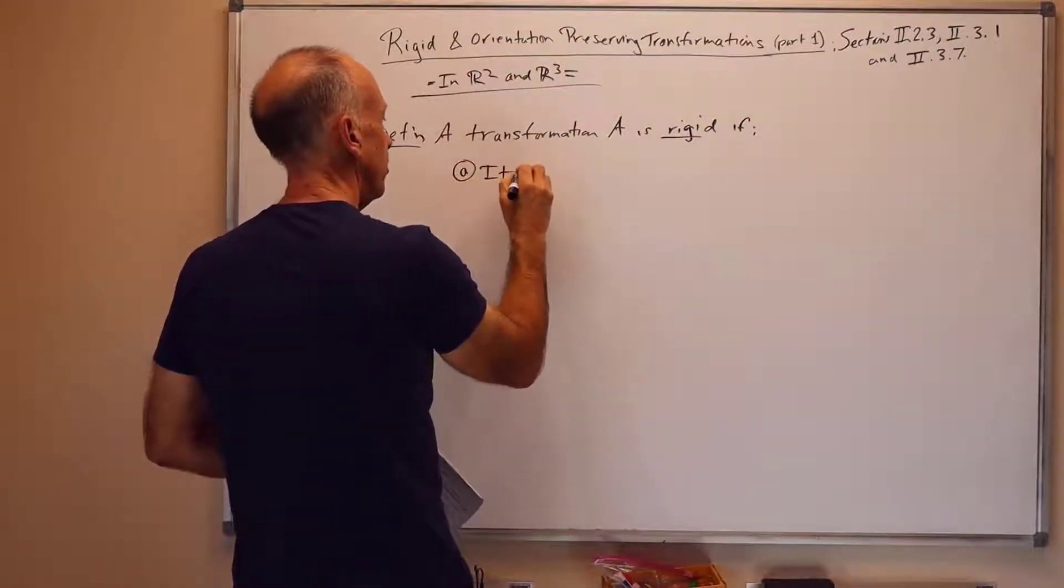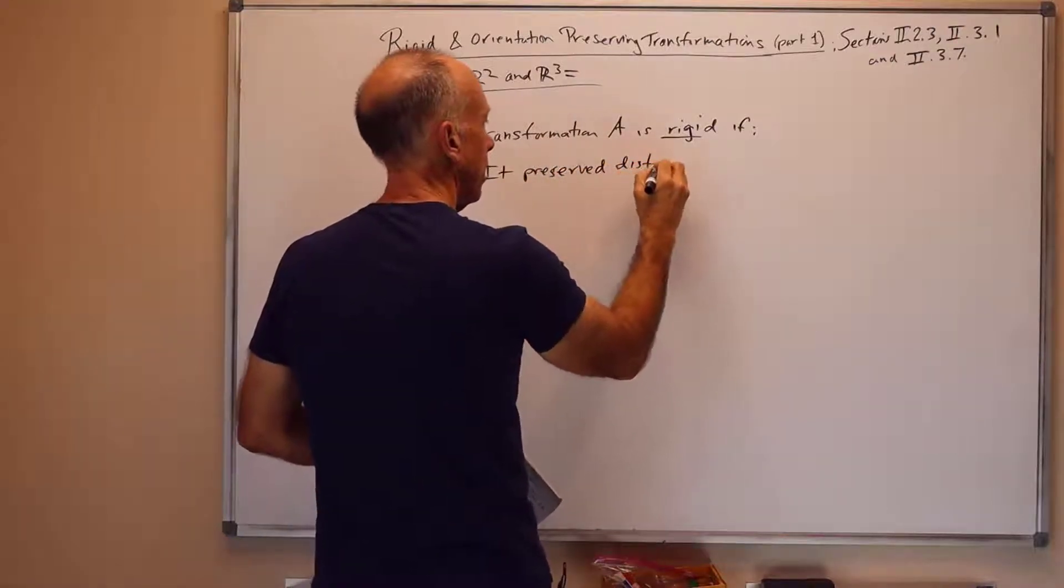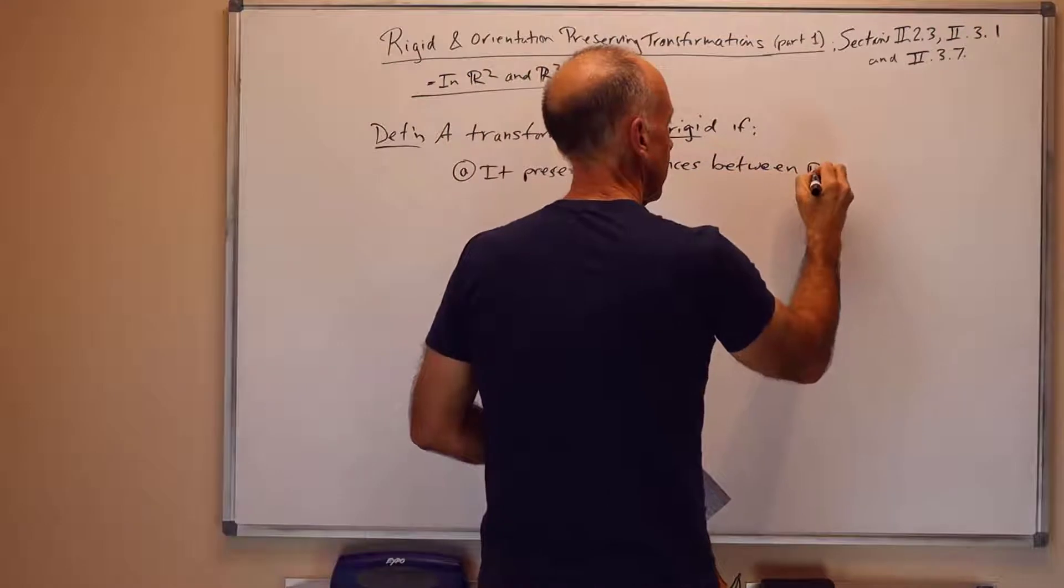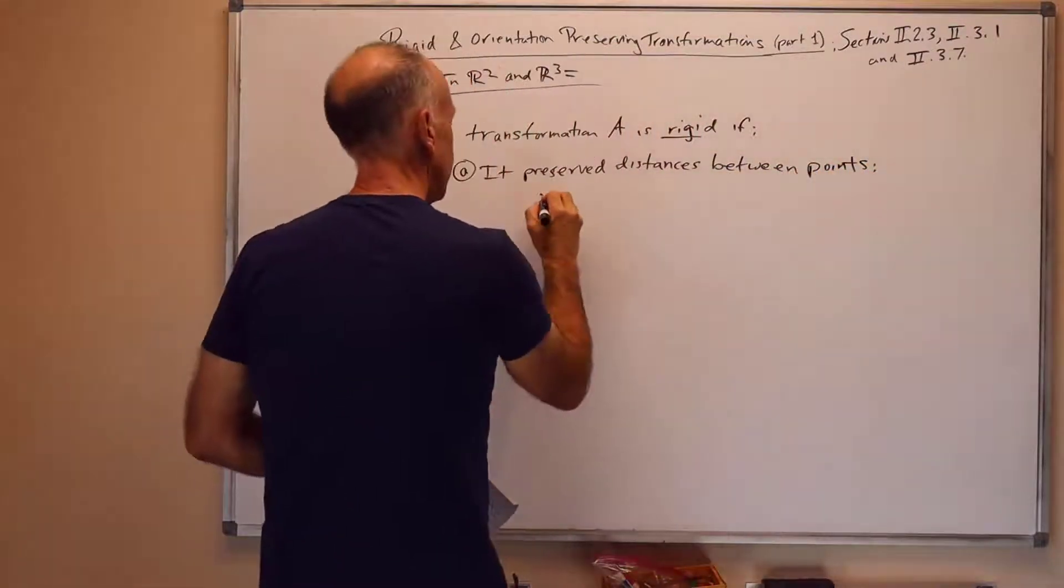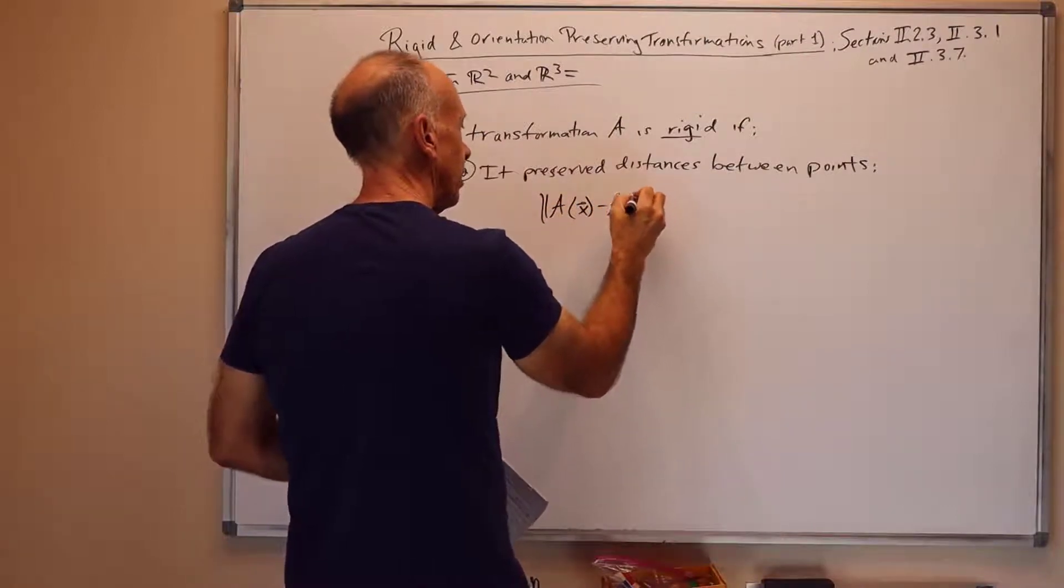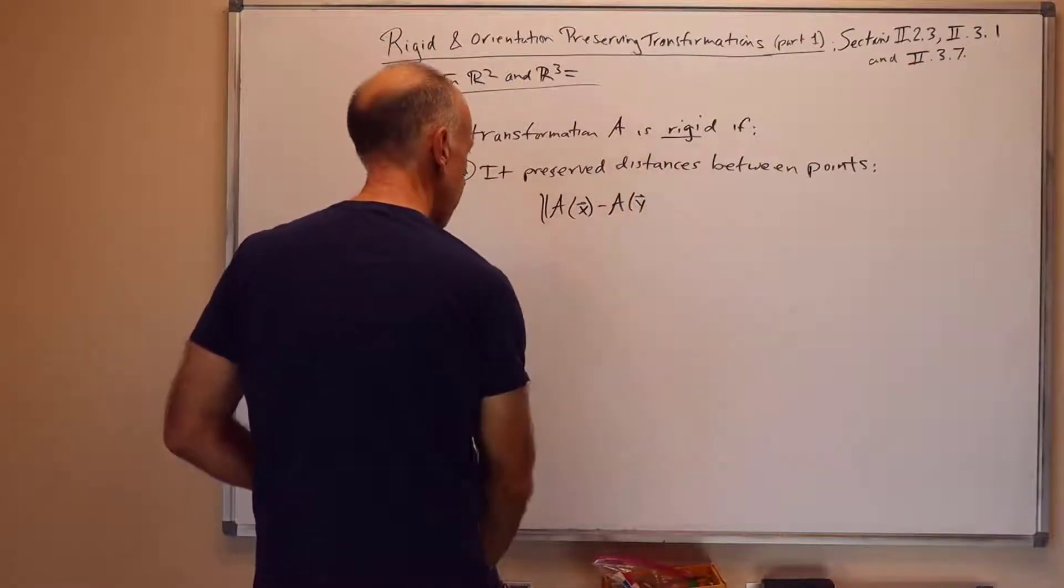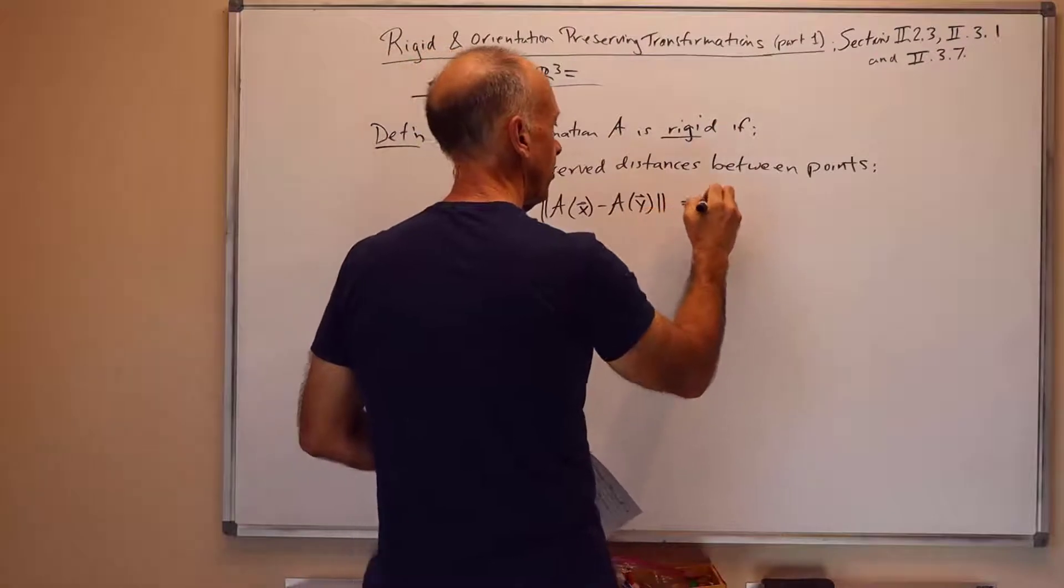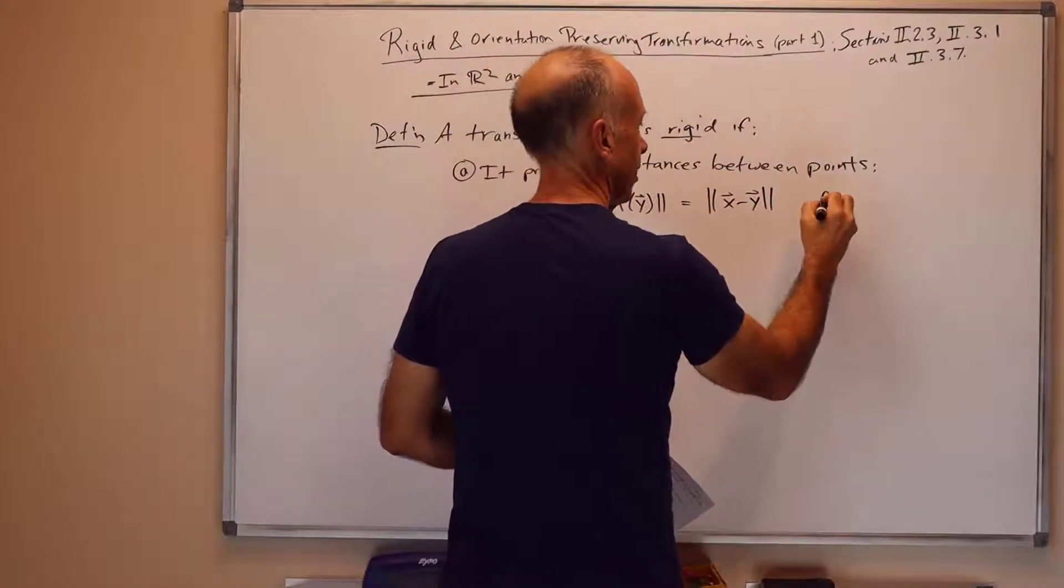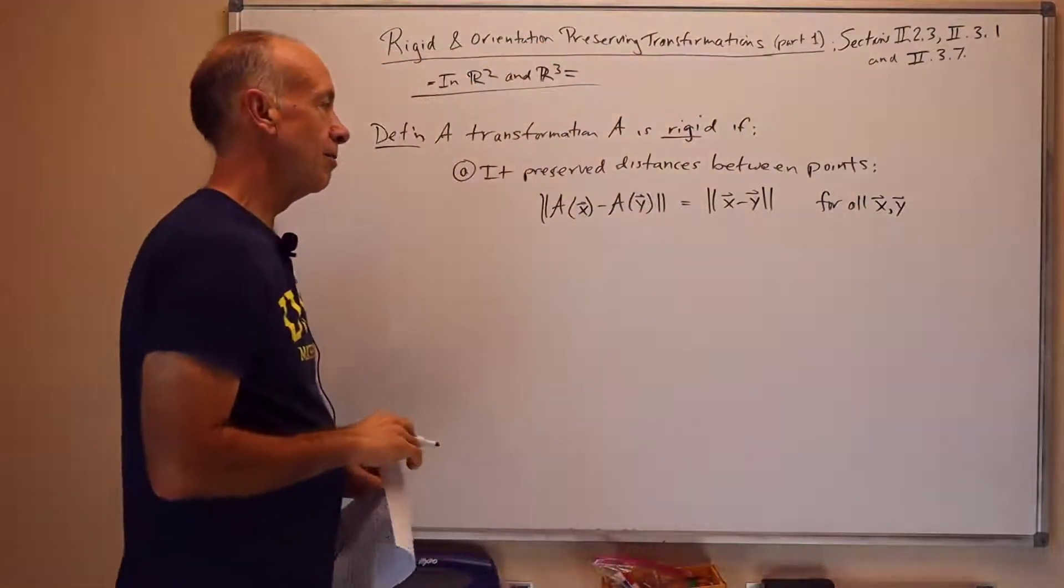First of all, it preserves distances between points. And this can be written out in symbols as follows. We'll say that the distance between A of x and A of y, which I'm writing as the magnitude of the difference between A of x and A of y, is equal to the distance between x and y, which is the magnitude of the difference of x and y, for all x and y in either R2 or R3, depending on which space we're working in.